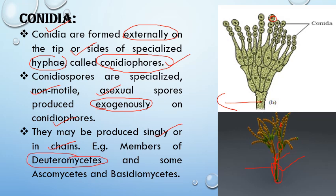Conidia are also found in some Ascomycetes and Basidiomycetes, which we'll discuss later. These special rounded structures are known as conidia, the structures bearing them are known as conidiophores, and they are produced in basipetal manner — that is, oldest at the apex and youngest at the base.